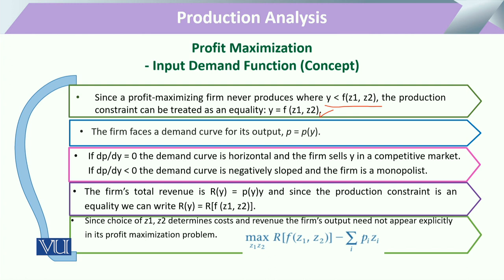The firm is producing in the market, and the market offers it a price. That price determines the demand function of the commodity. If we look at this, the demand curve of output that the firm faces from the market — that is P, and P is the function of Y. Sometimes we can say that P is equal to a function depending upon the quantity of the output.